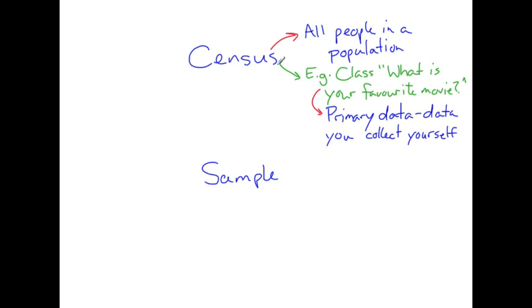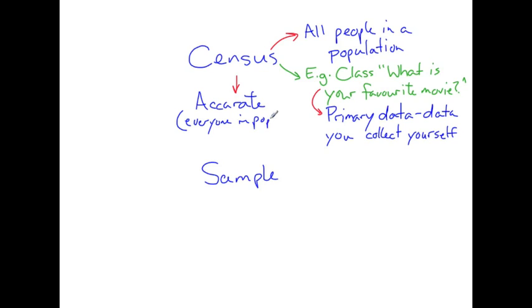A census survey is very accurate. The reason it is very accurate is because it involves every person in the population, so everyone in the population had input into the survey question.